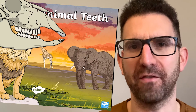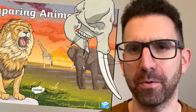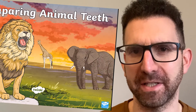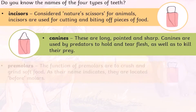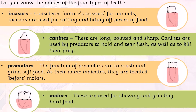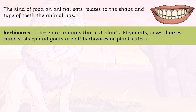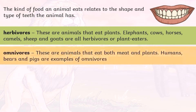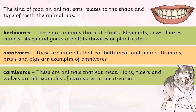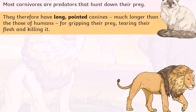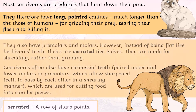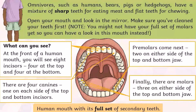The PowerPoint covers the whole scope of the topic, including the different individual types of teeth and their purposes, the most common types of diet consumed by animals, and detailed breakdowns of how carnivore, herbivore and omnivore teeth are arranged to best suit their individual diets.